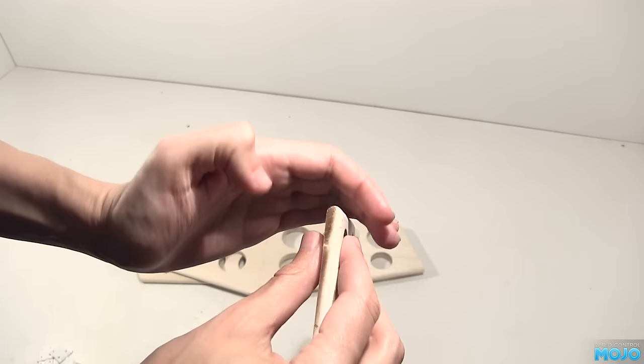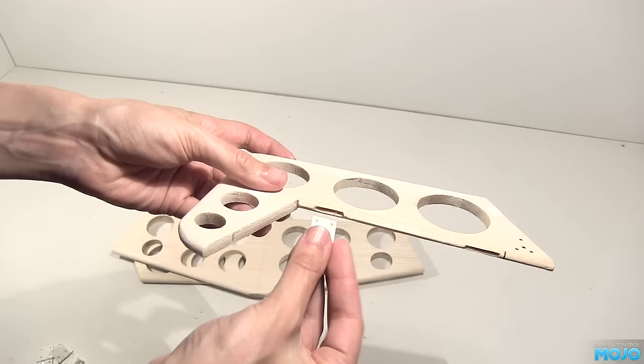Same with the tailplane. A little while later, we have this little pile of bits. All nice and smooth, all rounded off. I've also hinged the tailplane and one of the elevators. These Kavan hinges just slide in. Nice!